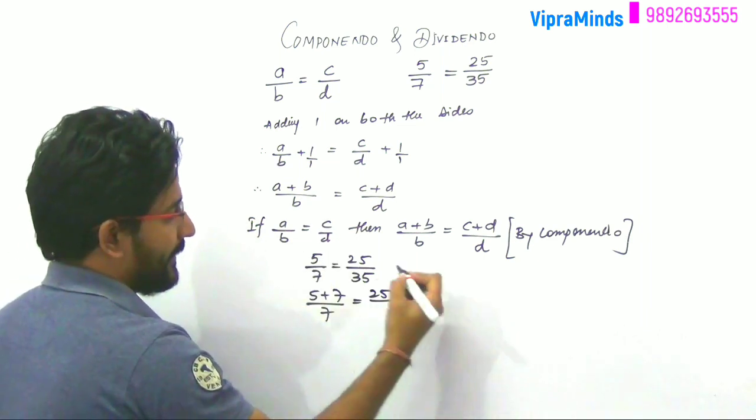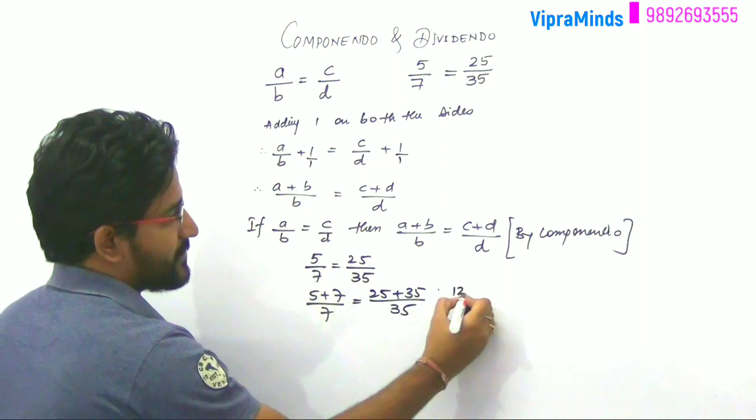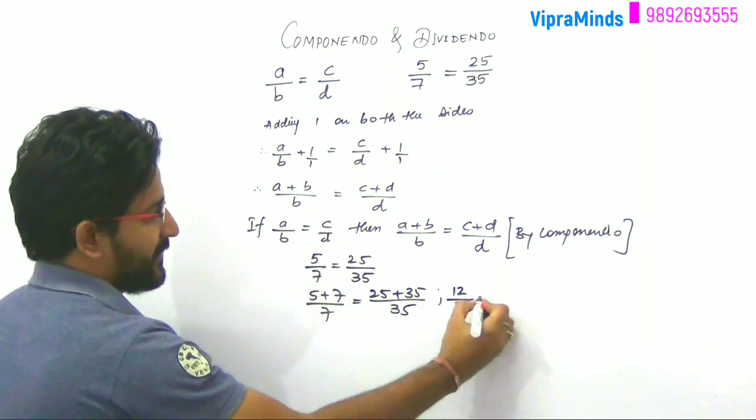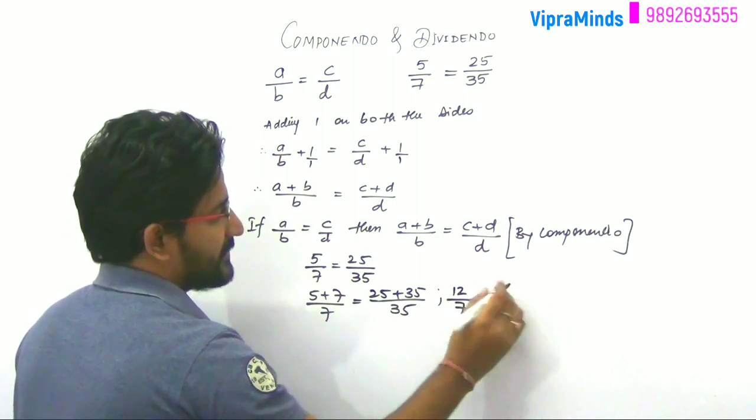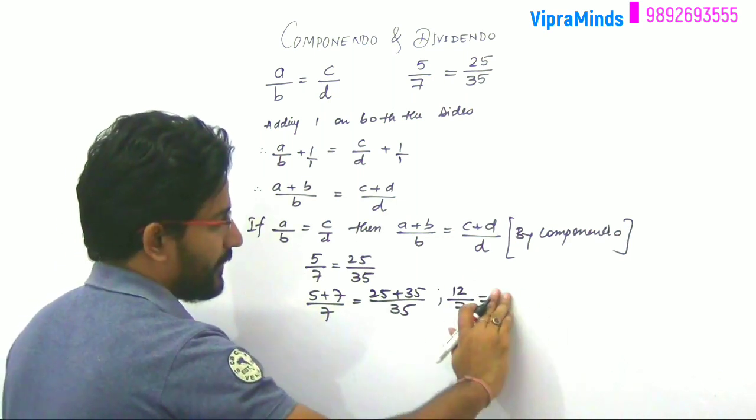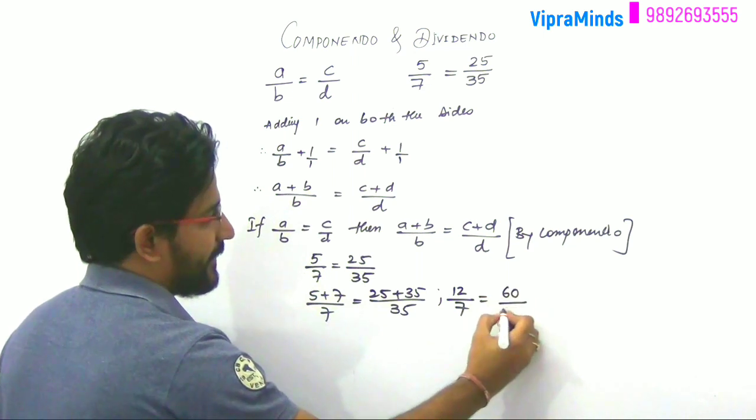So what are you going to get? We will get 5 plus 7, that is 12, divided by 7 equals 25 plus 35 is 60, that is 60 divided by 25.